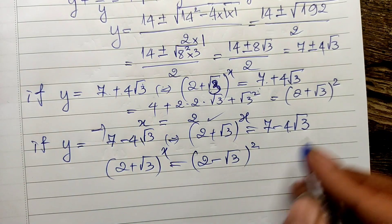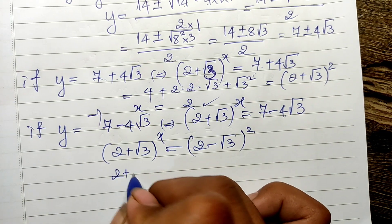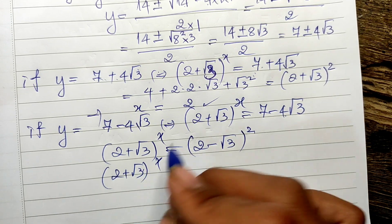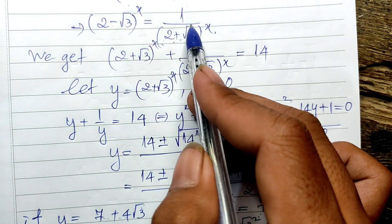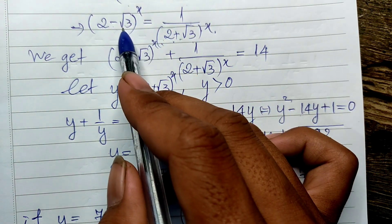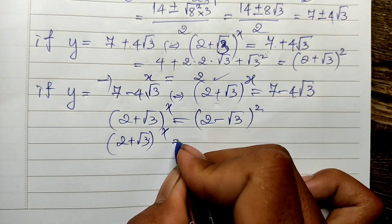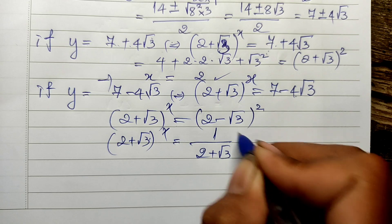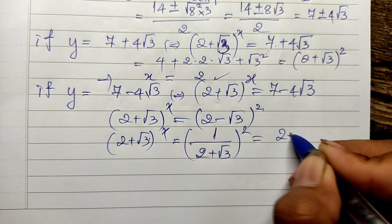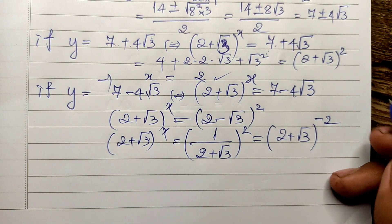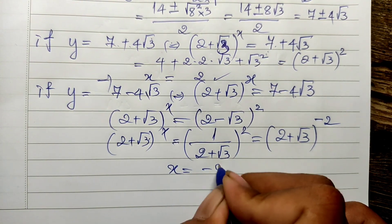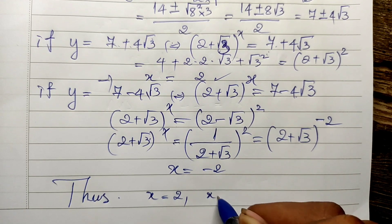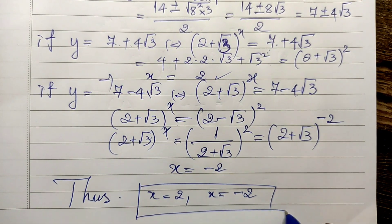This means (2 plus square root of 3) to the power 8 can be replaced by 1 divided by (2 plus square root of 3) squared. So we get (2 plus square root of 3) to the power minus 2. This gives us h equals minus 2. So h equals 2 and h equals minus 2 are our solutions.